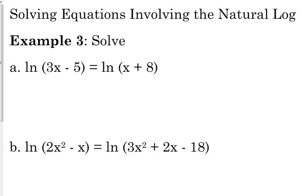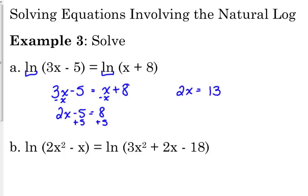The first example we've got natural log of 3x minus 5 is equal to the natural log of x plus 8. Just like with our exponential functions, when they had the same base, we set their exponents equal to each other. Just like with the log problems we looked at yesterday. As long as you have the same log on both sides, you set them equal to each other. Same thing here, we've got the natural log on both sides, so we just set what's inside the natural log equal to what's on the inside of the other natural log. So 3x minus 5 is equal to x plus 8. It's just a simple linear equation. Subtract x from both sides. 2x minus 5 is equal to 8. Add 5 to both sides. 2x is equal to 13, divide by 2. x is equal to 13 over 2.